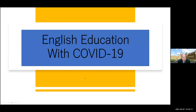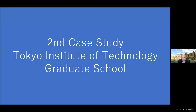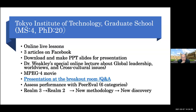Now let me move on to English education with COVID-19. My goal is to integrate ICT, AI, and worldviews in English. The second case study is at the Tokyo Institute of Technology Graduate School. I've been teaching there for almost 10 years, especially for master's and PhD students. Last year in 2020, for the first time — with 20 PhD students and 4 MS students — I conducted online live lessons. I let them read three articles on Facebook, download and make PPT slides for presentation. I invited some professors weekly from the United States via online lecture about global leadership, worldviews, and cross-cultural issues, including CQ — cultural intelligence quotient.